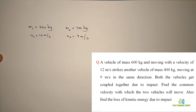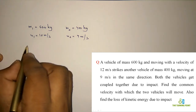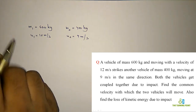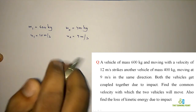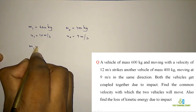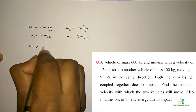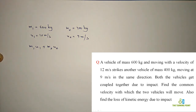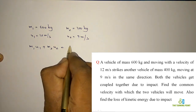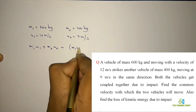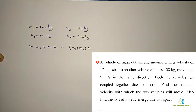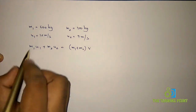We can use the law of conservation of momentum, which states that initial momentum equals final momentum. Initial momentum includes momentum of the first vehicle (m1·u1) plus momentum of the second vehicle (m2·u2). Final momentum is the combined mass moving with a common velocity v, since both masses are coupled together. We need to find v.